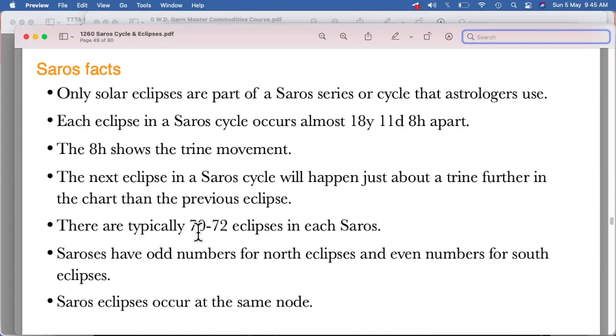There are total 70 to 72 eclipses in each Saros. Saros have odd numbers for north eclipses and even numbers for south eclipses. Saros eclipses occur at the same node, right? So this is some of the basic information which is there. We'll come down with some more information.